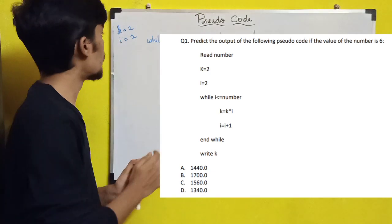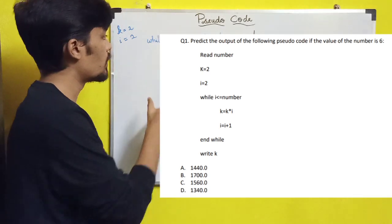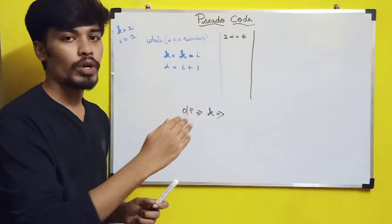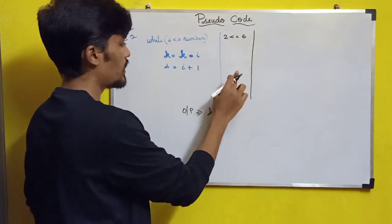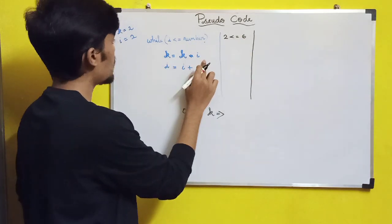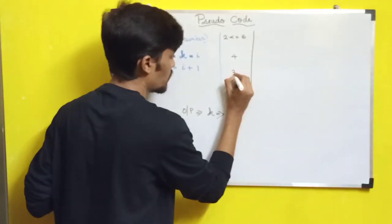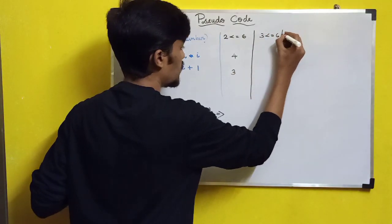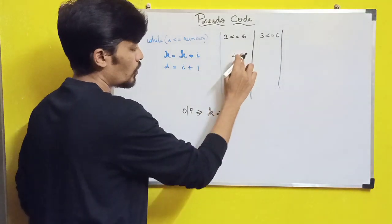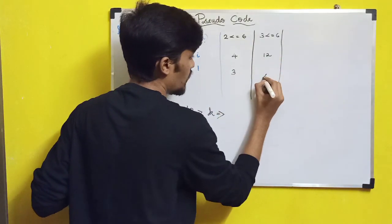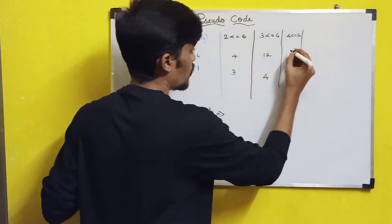The first question is displayed. K is equal to K into I. The K value is 4, I value is 3, so 4 into 3 is 12. I value increments to 4. So 4 is less than or equal to 6 — condition is satisfied. So 12 into 4 is 48.